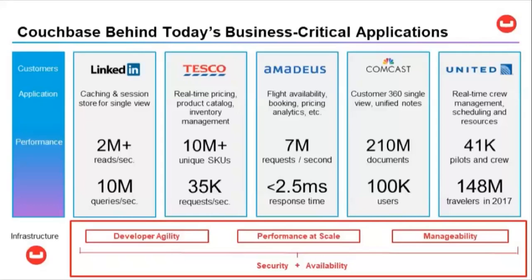Let's first look at LinkedIn. They needed a single view across their 450 million accounts, with performance requirements of over 2 million reads per second and 10 million queries per second. Tesco, now the third largest retailer in the world, needed to store and update product data for over 10 million items and had to scale to support 35,000 requests per second, as well as peak Black Friday traffic. Amadeus, the well-known travel platform, can handle 7 million requests per second with under 2.5 millisecond response times.